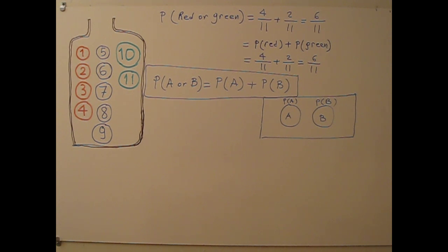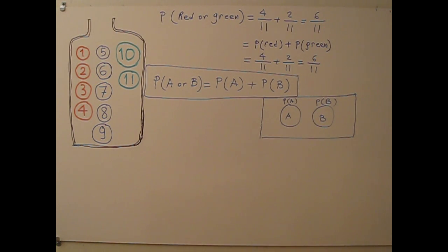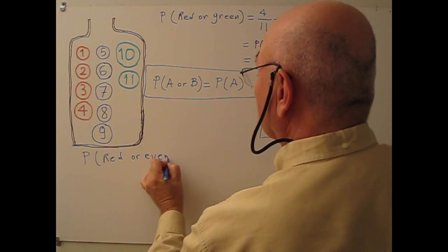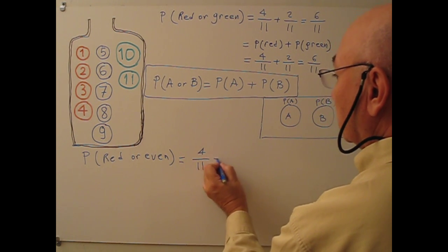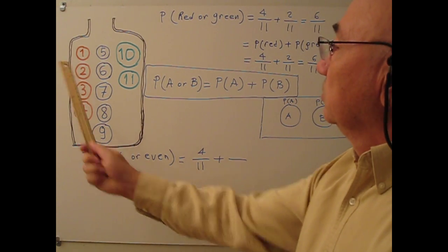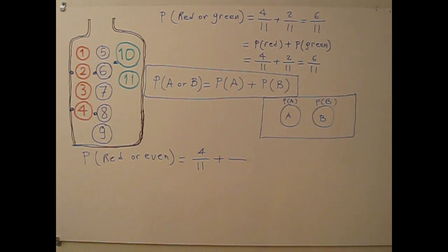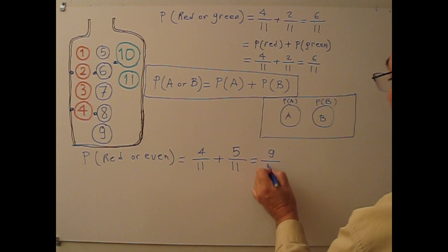Now I'll give an example of a Non-Mutually Exclusive event. Again, I put my hand in and randomly draw a ball. This time the question is: what is the probability of drawing either a red or even-numbered ball? P(red or even): red is 4 over 11. The even-numbered balls are 2, 4, 6, 8 — so I have 5 even-numbered balls, giving 5 over 11. Adding these gives 9 over 11.